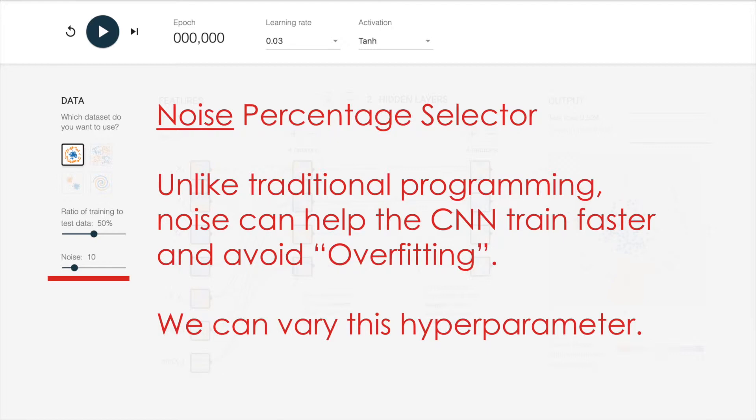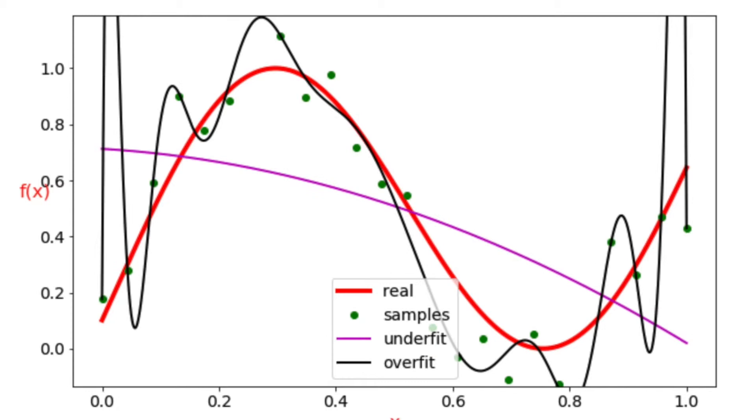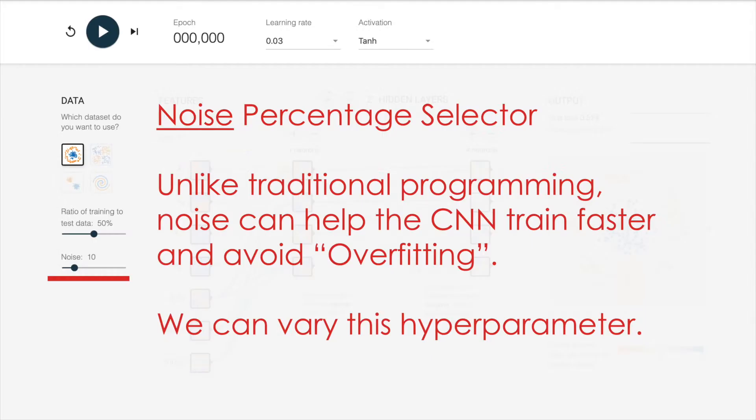The noise percentage is interesting. In traditional deterministic programming, we don't use noise. We don't like noise, and the whole digital assumption was that we have eliminated noise. But in neural networks, noise can help the neural network train faster and avoid a phenomenon called overfitting, where you actually train the model just to recognize what it's seen, but not to be able to recognize things that are like what it's seen.